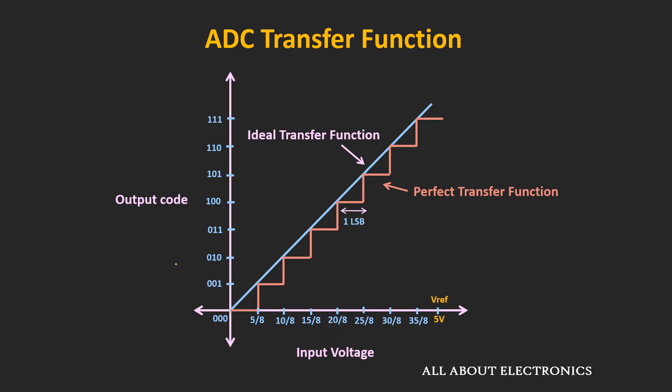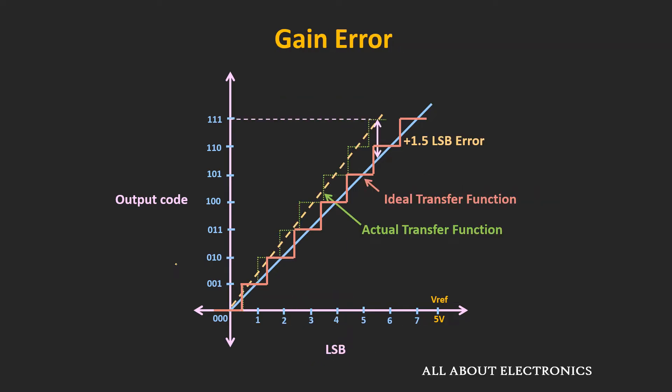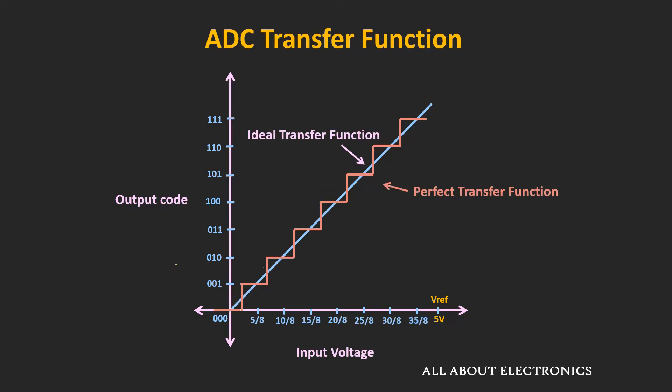By shifting the entire transfer function to the left by 0.5 LSB, this error can be reduced to ±0.5 LSB. If there is an offset error or the gain error in the ADC, then the transfer function would deviate from the perfect transfer function. But using calibration, it is possible to remove all these errors. After removal of the gain error and the offset error, the actual transfer function would match the perfect transfer function. However, due to nonlinearities in the ADC, it is still possible that the actual transfer function deviates from the perfect transfer function.